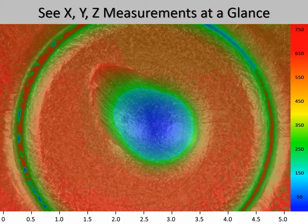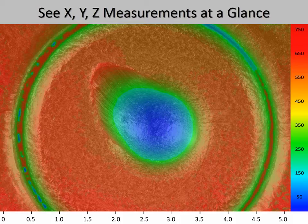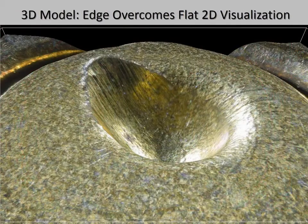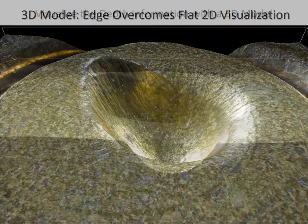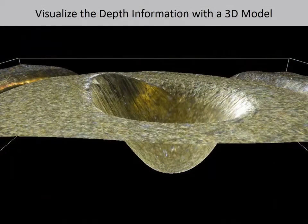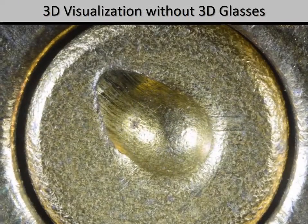The bottom of the pit is zero, as shown in blue, and the highest point is shown in red. The depth information can be easily visualized by turning the image into a 3D model. These 3D models can be viewed at any chosen angle. The depth information can also be visualized by producing 3D video loops.